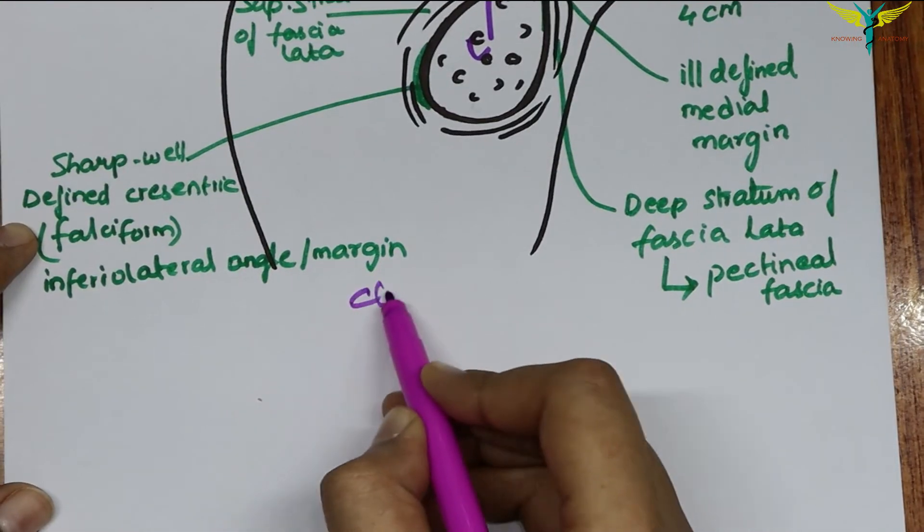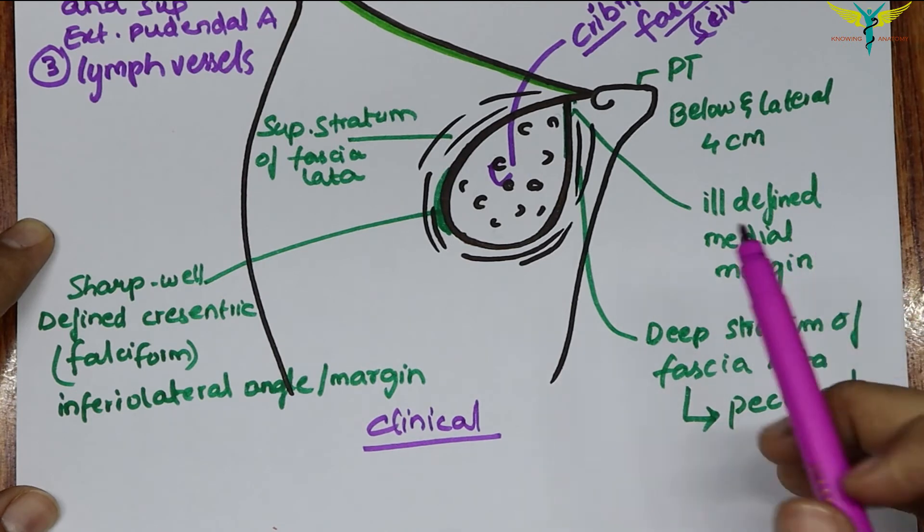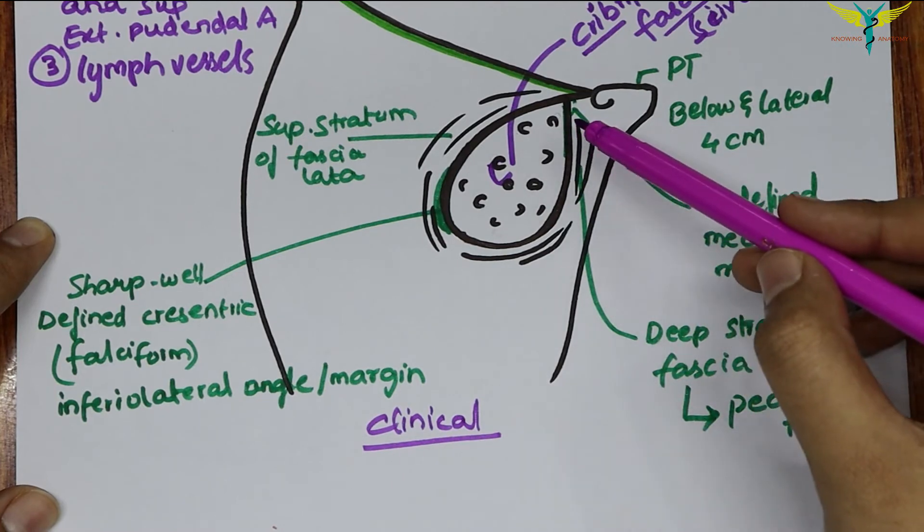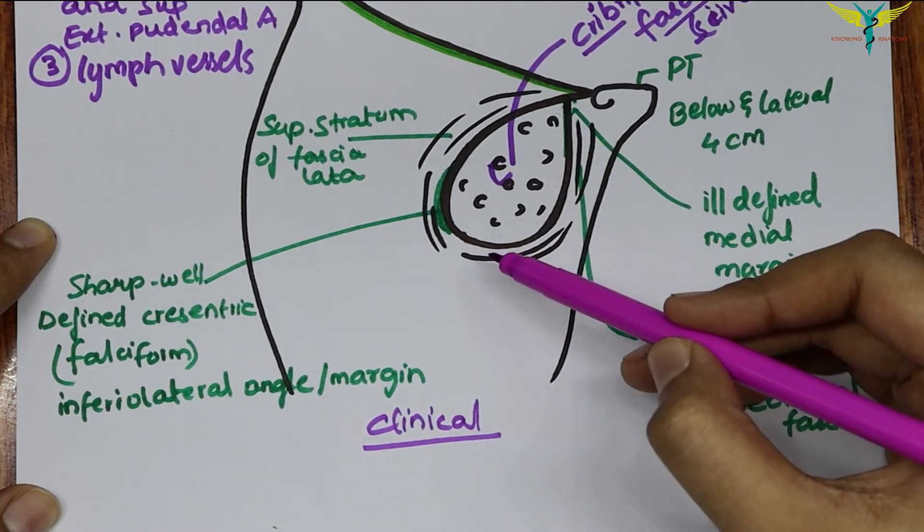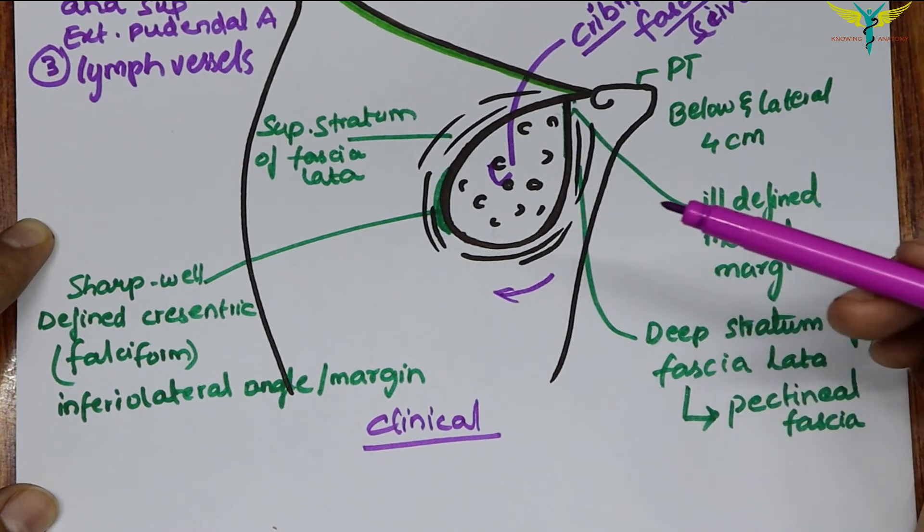From a clinical point of view, the fascia lata, which forms the saphenous opening, is attached to the undersurface of the inguinal ligament. When the thigh is extended, it pulls the abdominal wall downwards and makes it tenser.